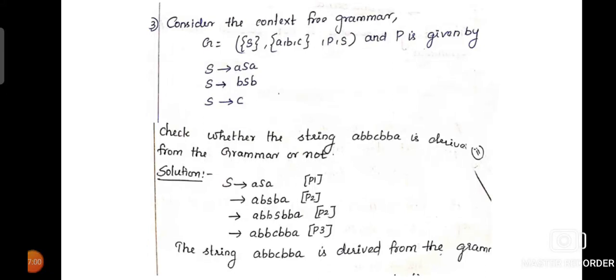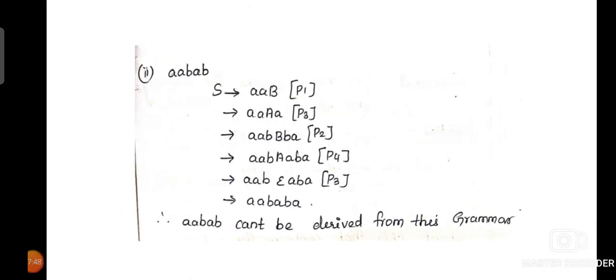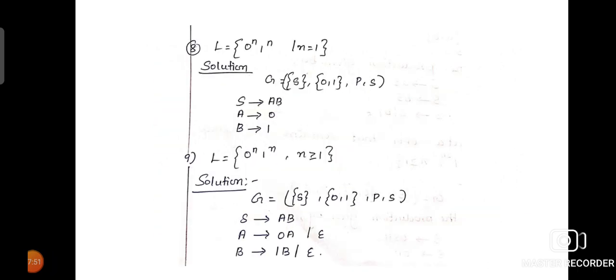This is also the same kind of problem — we perform derivations, apply the appropriate substitutions, and try to produce the string. Our grammar has four productions: S tends to AAB, A tends to BB, and A tends to epsilon. So wherever applicable, epsilon can be substituted for A. In the next step, epsilon gets cancelled — epsilon means null. So in the necessary places, we can apply null production rules, and in the next step they will be cancelled. We are checking another string for acceptability.